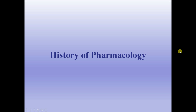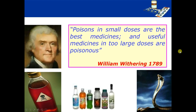Let's start from the history of pharmacology. Please take a look at this phrase by William Withering: 'Poisons in small doses are the best medicines and useful medicines in too large doses are poisonous.' This phrase is very interesting and it explains that dose is very important for any kind of substance — whether we call it a poison or a useful one.